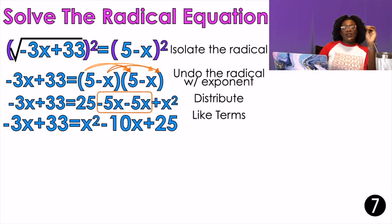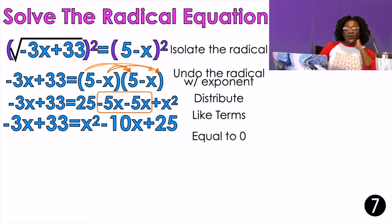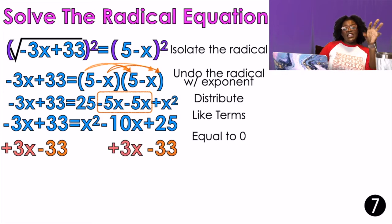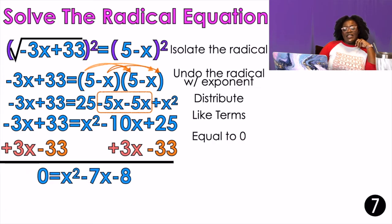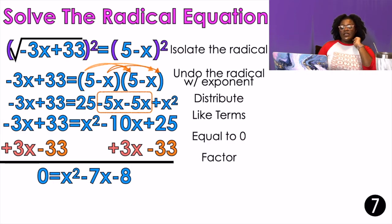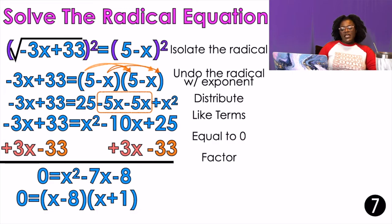When I have a quadratic, I set the equation equal to 0. I move the negative 3x and the 33 to the other side, and I get x squared minus 7x minus 8 equals 0. Factor: I get x minus 8 times x plus 1, giving x equals positive 8 and x equals negative 1. I have two answers.